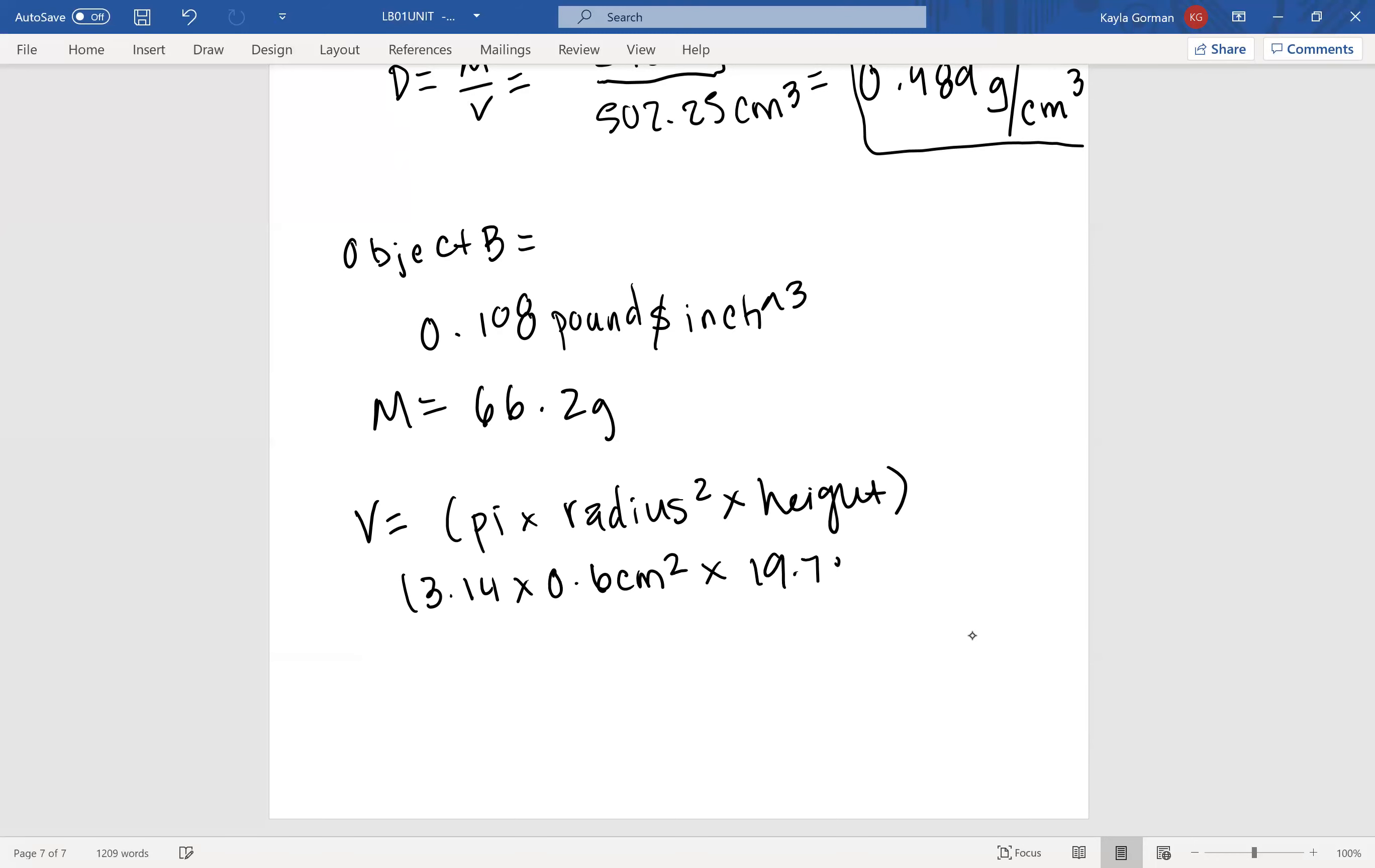So we get 0.6 centimeters squared times 19.7 centimeters. And then our final answer once you plug that into a calculator is 22.27 centimeters cubed. Once again, now that we have the numbers we need, the centimeters cubed and the grams, we just do our density is mass over volume and that's equal to 66.2 grams over 22.27 centimeters cubed, and that is going to equal 2.96 grams.